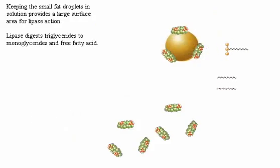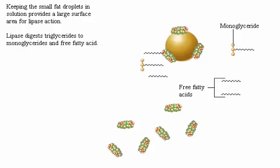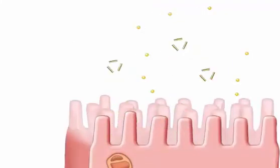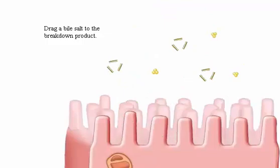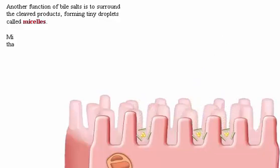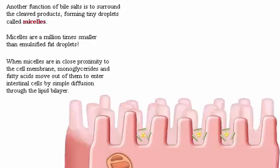Lipase digests triglycerides to monoglycerides and free fatty acids. Another function of bile salts is to surround the cleaved products, forming tiny droplets called micelles. Micelles are a million times smaller than emulsified fat droplets. When micelles are in close proximity to the cell membrane, monoglycerides and fatty acids move out of them to enter intestinal cells by simple diffusion through the lipid bilayer.